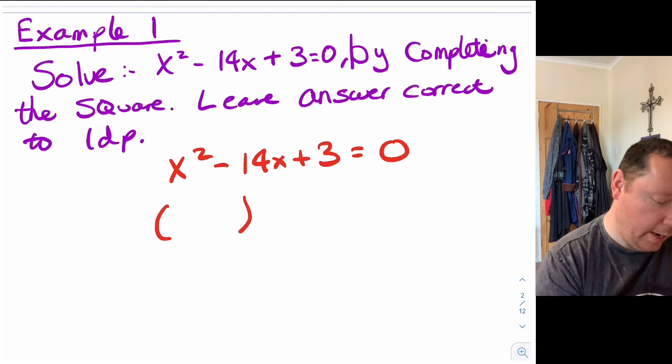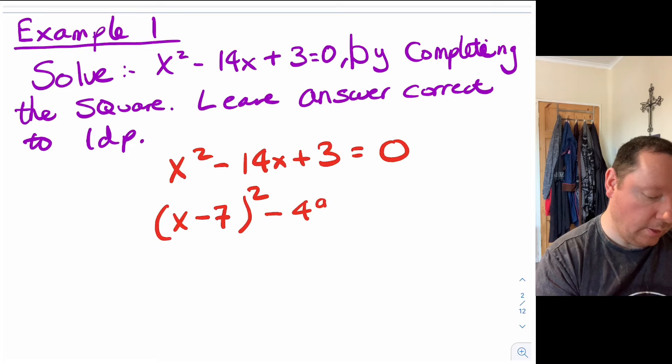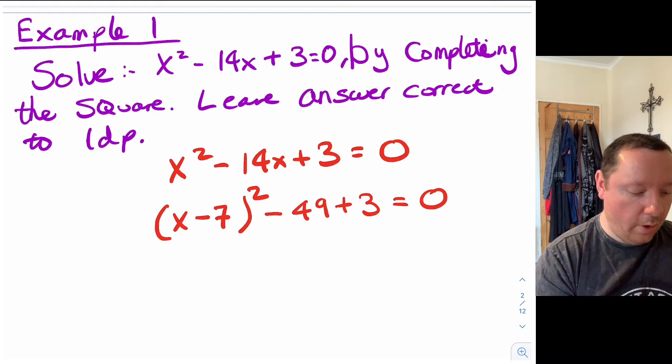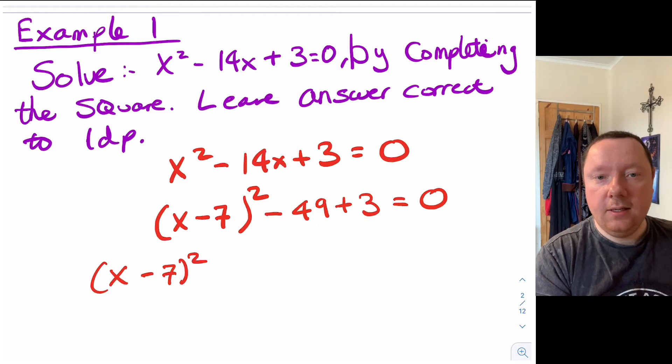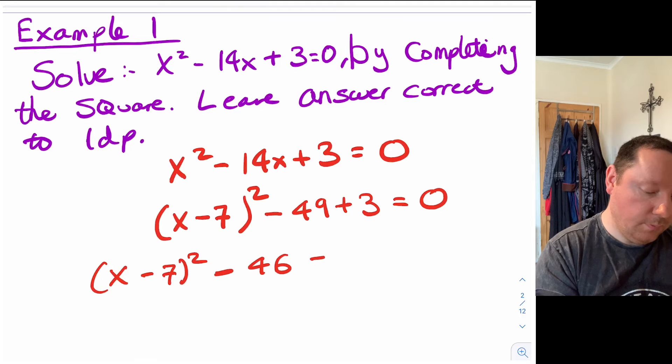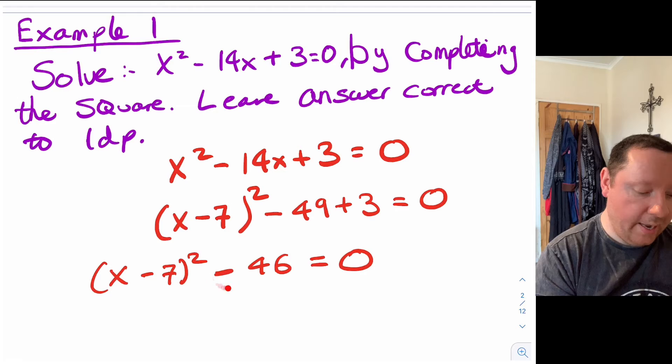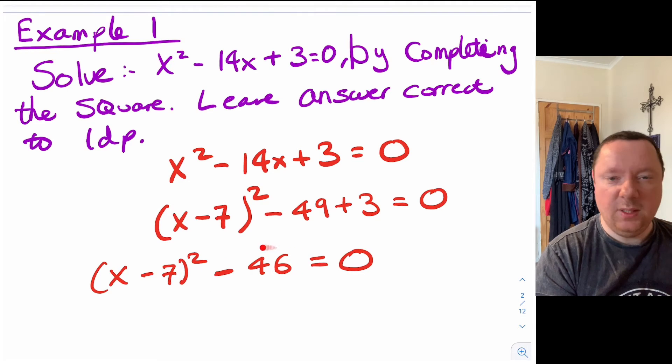So we open a bracket and we get x minus 7 squared. 7 times 7 is 49 so I take away 49 and I still need to add 3 and that equals 0. So we've got x minus 7 squared still. We'll work out the minus 49 and add 3. That's minus 46 and that equals 0. This number here will always be negative if this is going to work and the reason being when you move over here it becomes positive. If you don't get a negative number here when you're doing this it means probably something's going wrong.